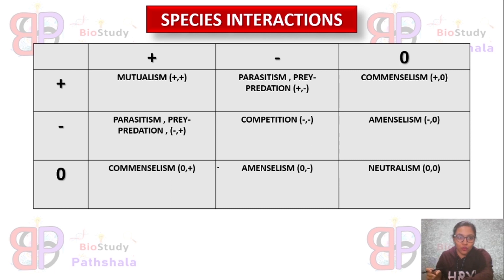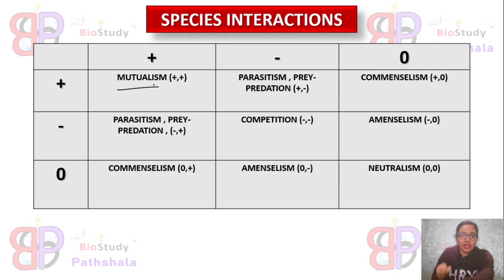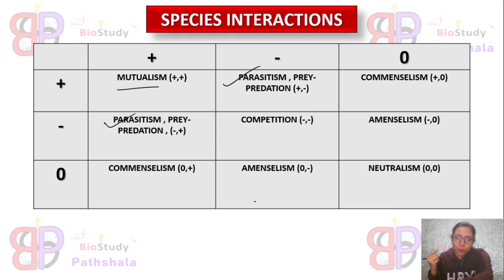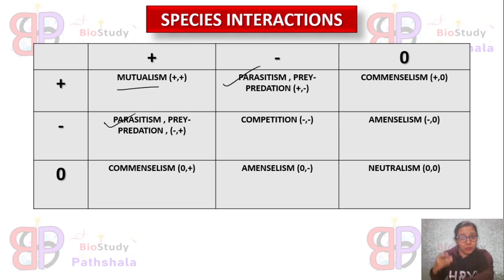There are six types of species interactions based on the impact — positive, negative, or neutral. Mutualism shows a positive-positive effect, meaning both individuals positively impact each other. In parasitism or prey-predation, one shows a positive effect and the other shows a negative effect — the prey is negatively affected while the predator is positively affected.